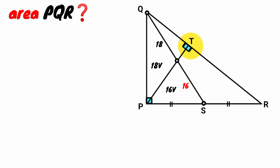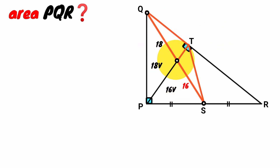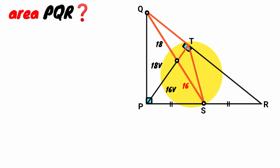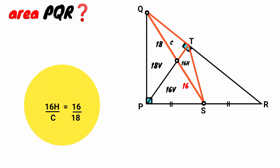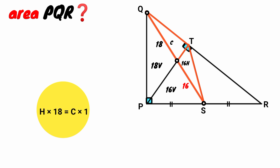Call this point T. From point T, draw a line segment to point S. Now look at triangle QST. It also has a cevian dividing this side into two segments of length 18 units and 16 units. So by the cevian ratio theorem, the area of this triangle — let's call it 16H — divided by that of this one C, must equal 16 divided by 18. So 16H over C equals 16 over 18, giving H over C equals 1 over 18. Cross multiply: 18H equals C, that is C equals 18H.